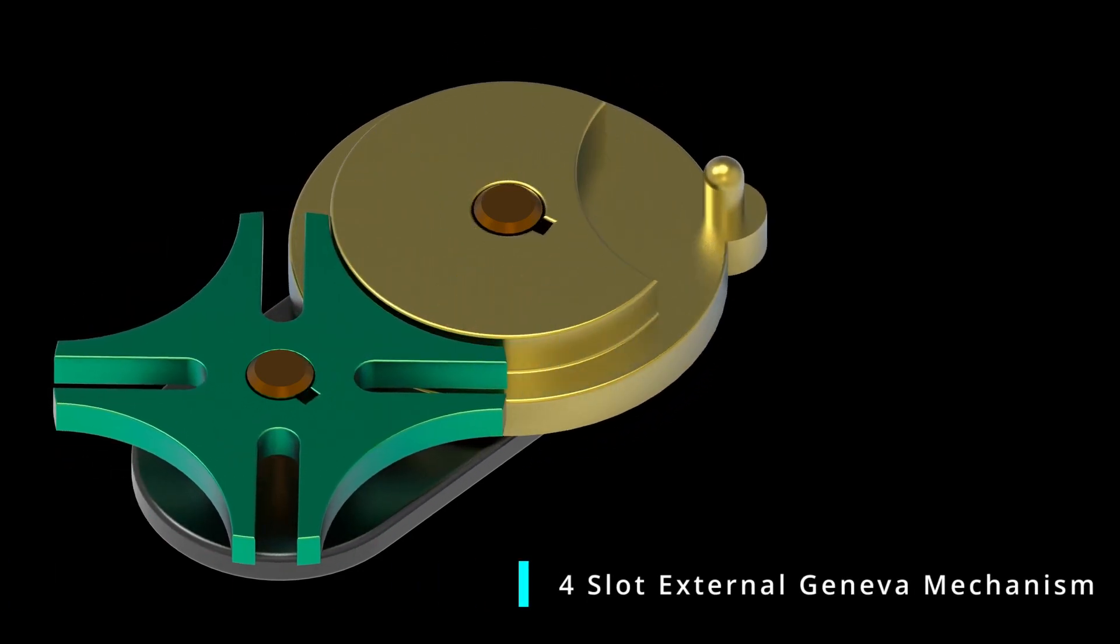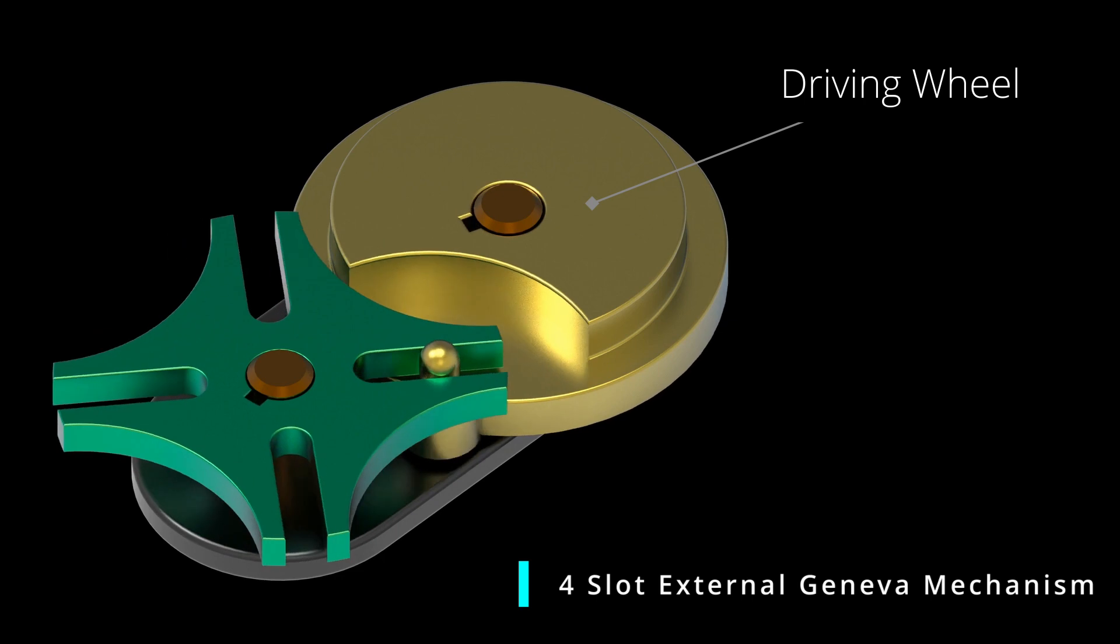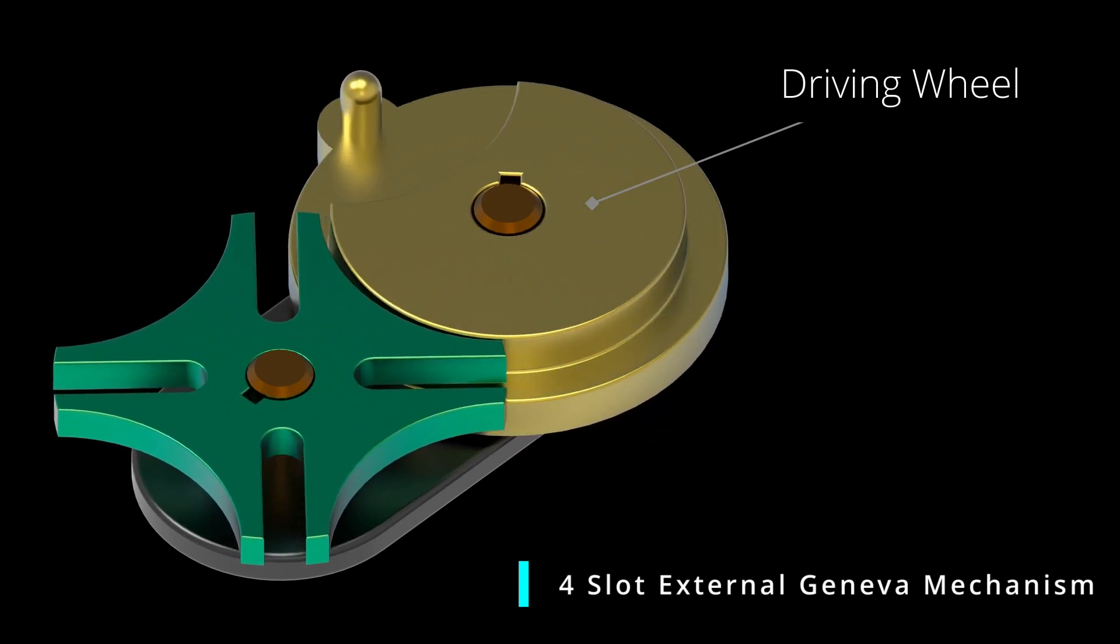The Geneva mechanism, also known as the Geneva drive mechanism, is a device used to convert rotary motion into linear motion or vice versa.